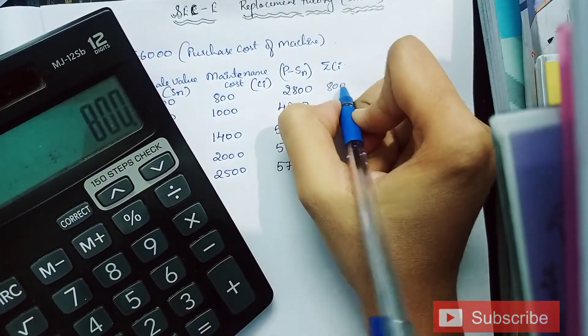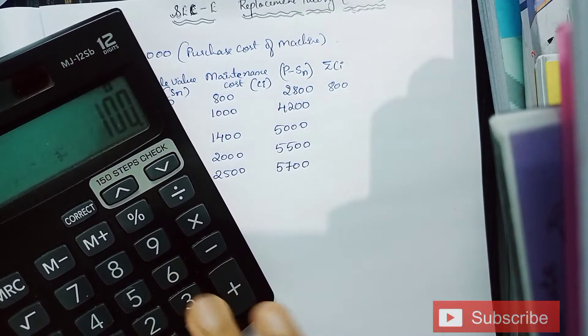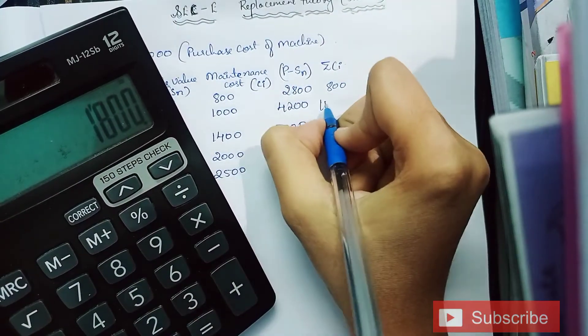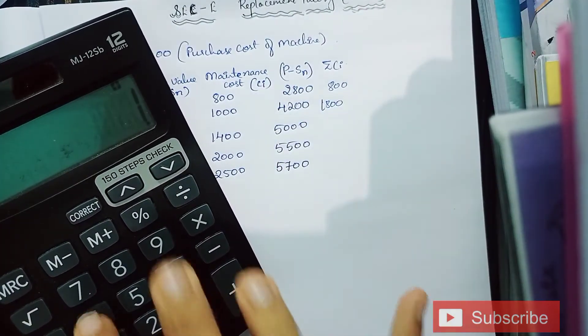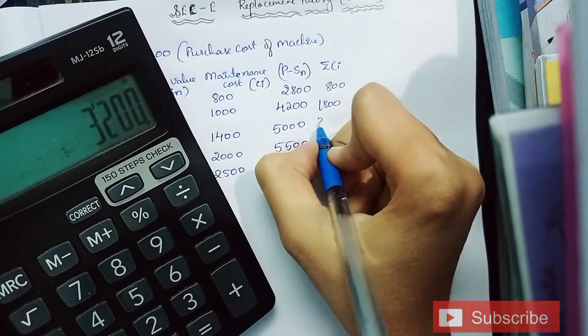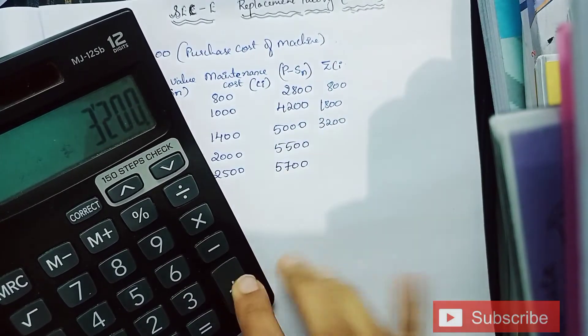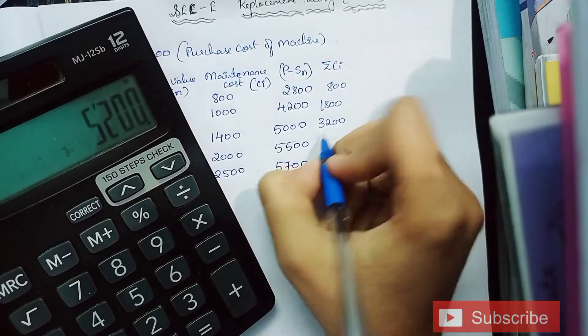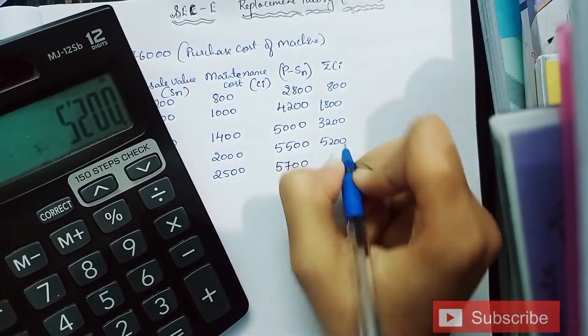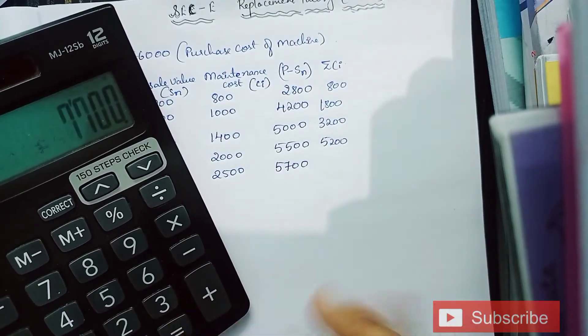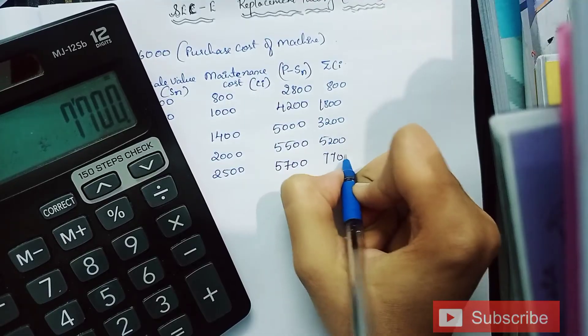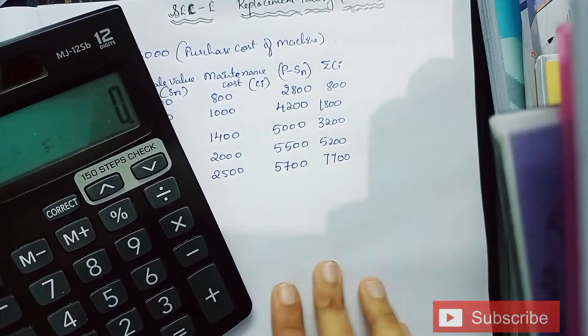Add 1000 which becomes 1800. Add 1400 which is 3200. Add 2000 which makes it 5200. And lastly add 2500 which makes it 7700.